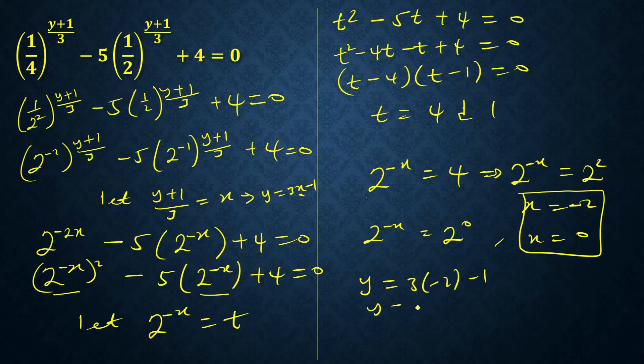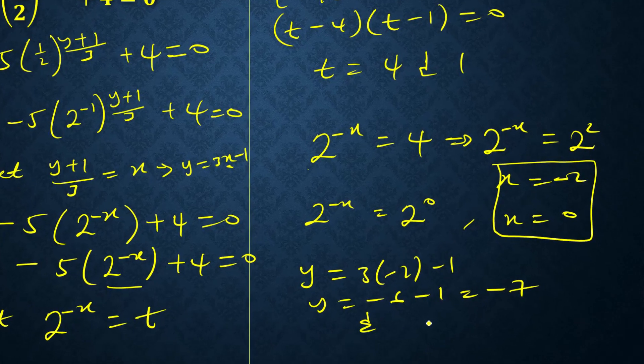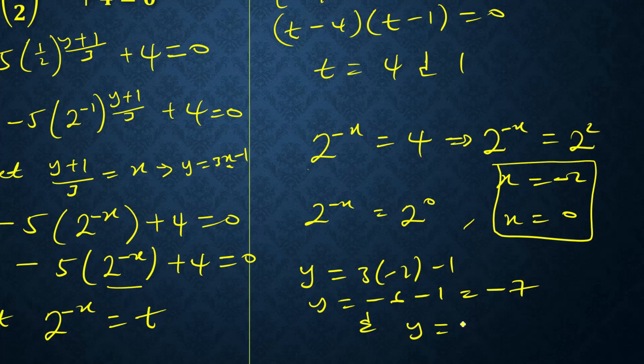And the second one will be y equals 3 times 0 minus 1. So 3 times 0 is 0, so y is equal to negative 1.